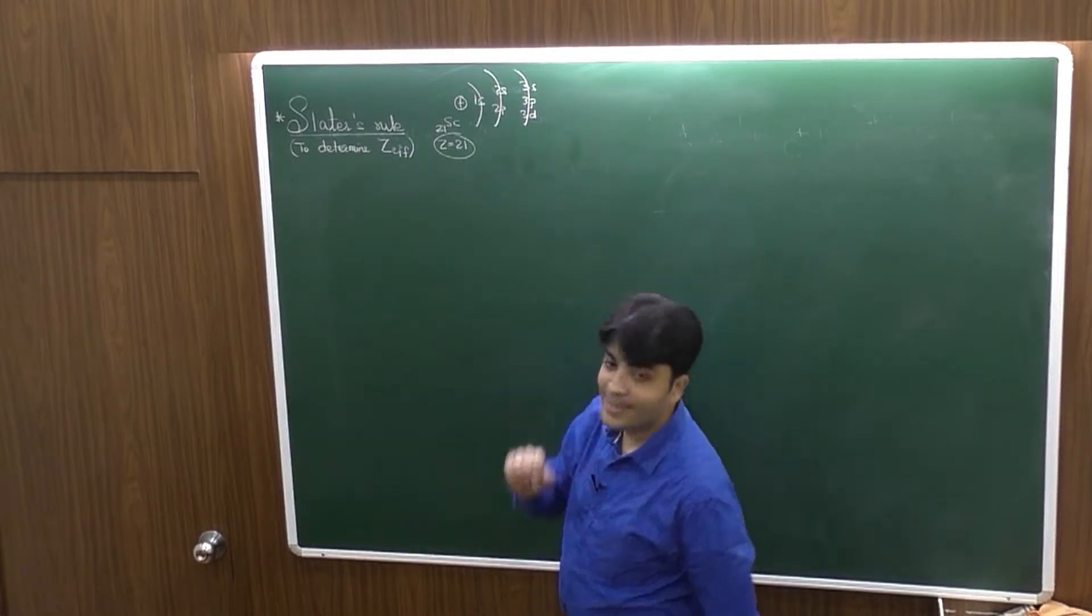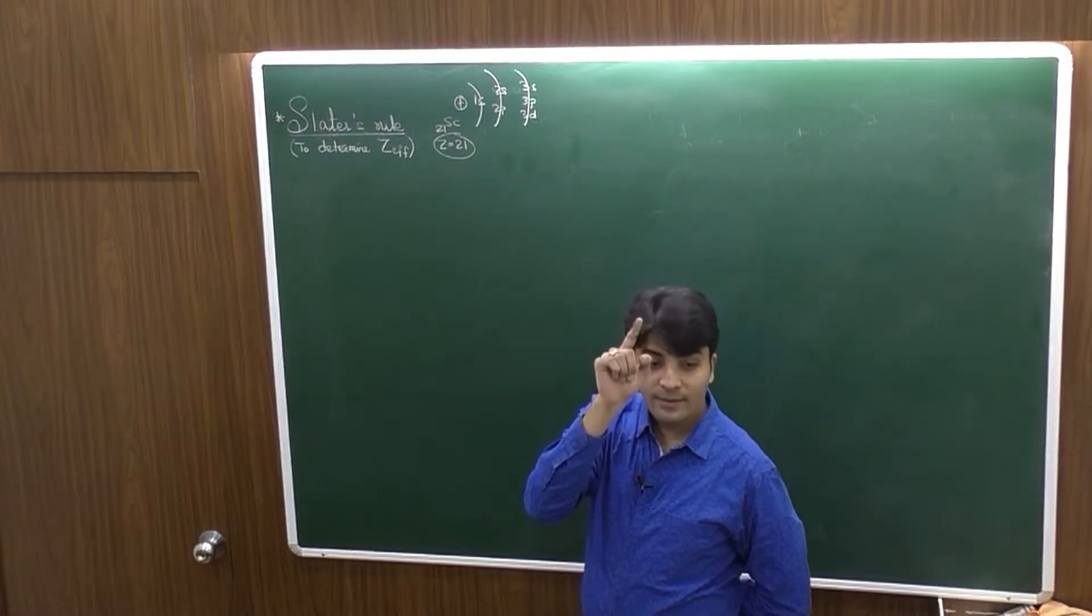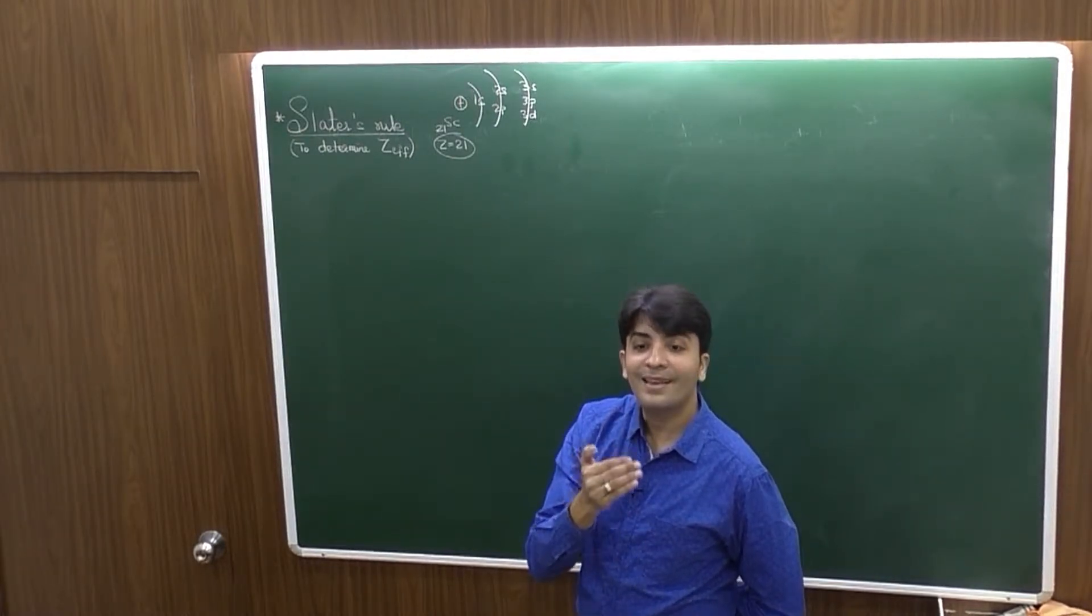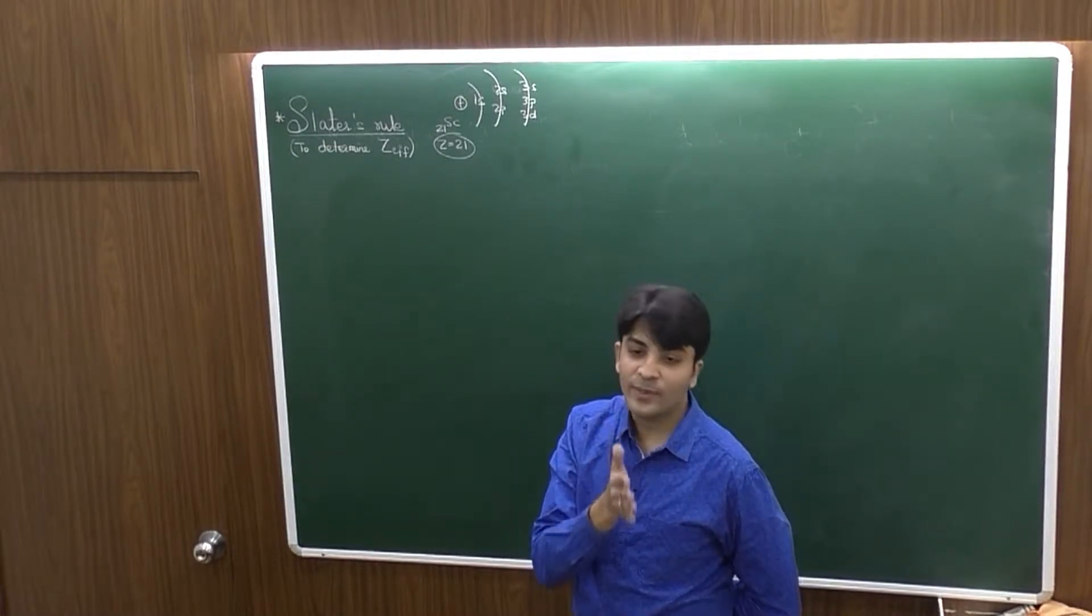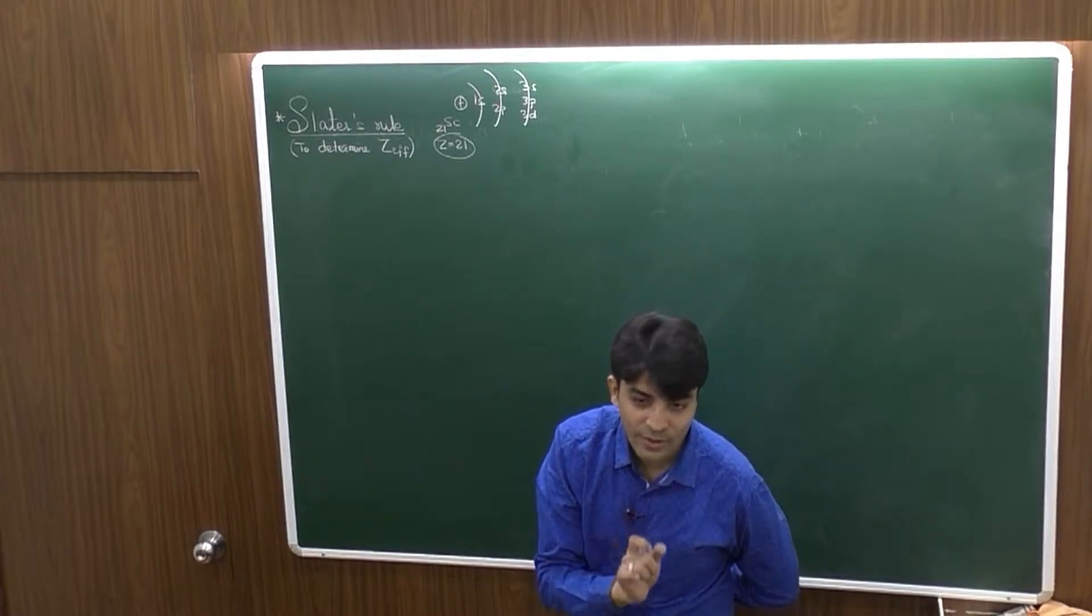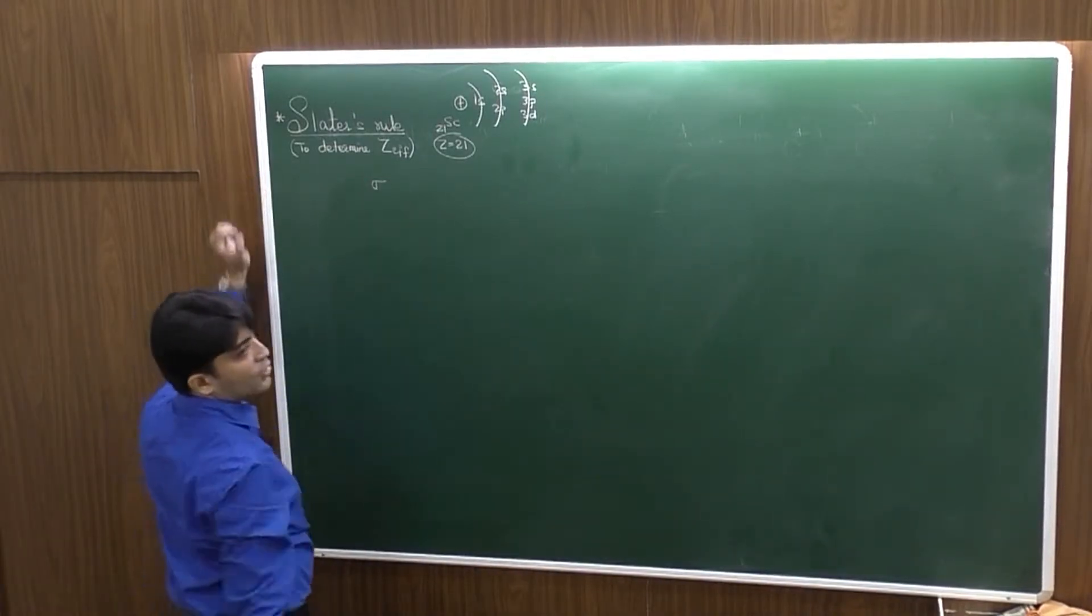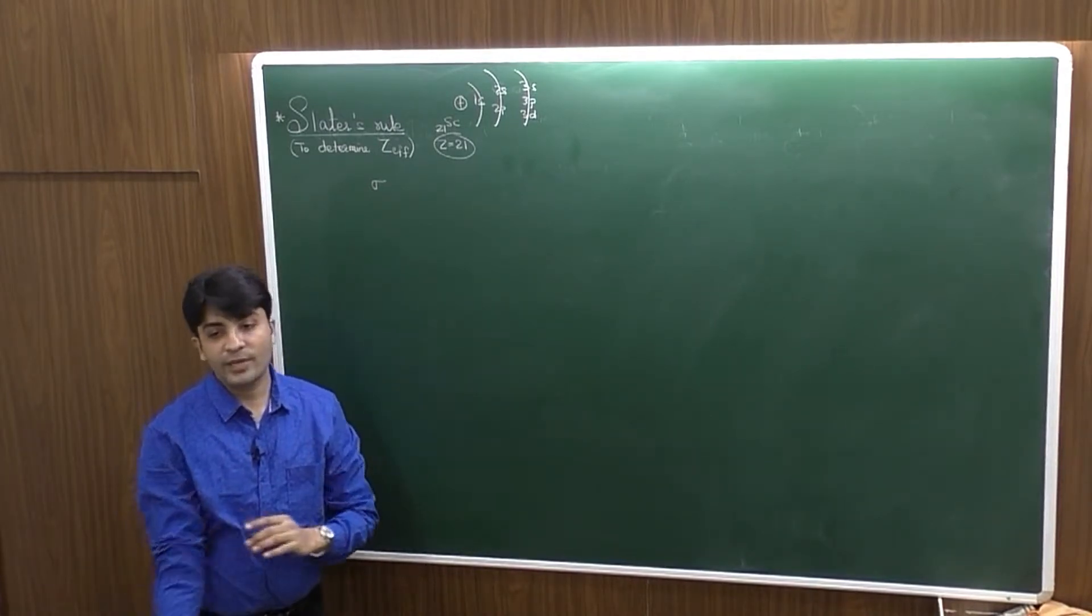But 2S, 2P in turn actually sees less than 21 protons. Third, 3S, 3P, 3D will be able to see even lesser number of protons. So, effectively, they will experience the attraction from less number of protons. And that lesser number of protons is indicated by a constant called sigma, which is called shielding constant or screening constant.